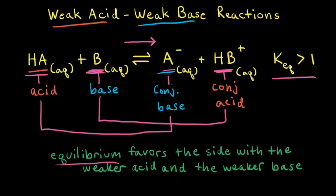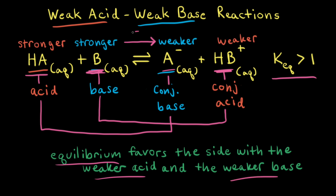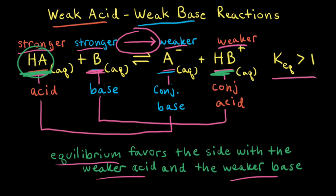For acid-base reactions, the equilibrium always favors the side with the weaker acid and the weaker base. Therefore, since the equilibrium favors the products, the weaker acid and the weaker base are on the product side, and the stronger acid and the stronger base are on the reactant side. So when comparing our two acids, HA and HB⁺, HA is the stronger acid. And when comparing our two bases, B and A⁻, B is the stronger base.